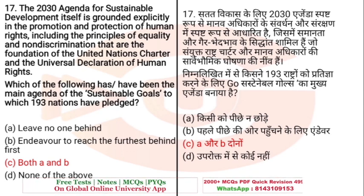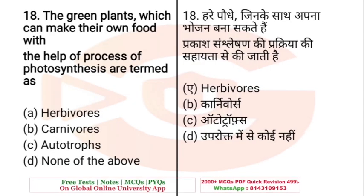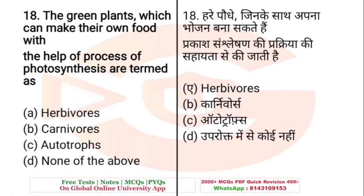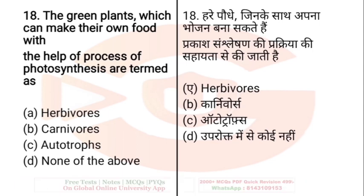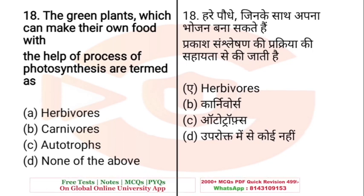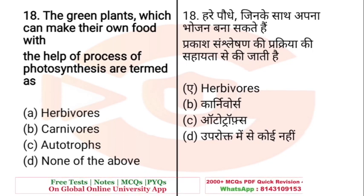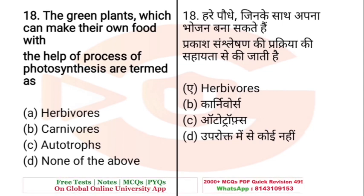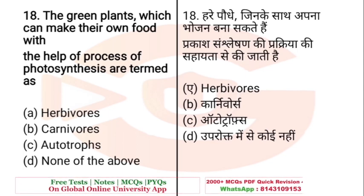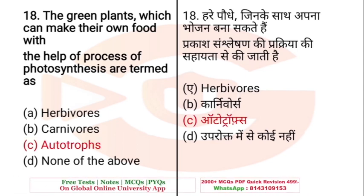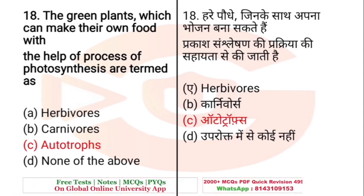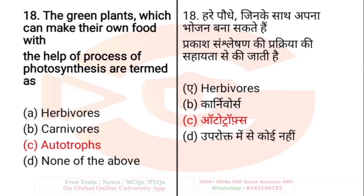Question: The green plants which can make their own food with the help of the process of photosynthesis are termed as — A. Herbivores, B. Carnivores, C. Autotrophs, D. None of the above. The right answer is C — Autotrophs. Autotrophs can make their own food through photosynthesis.